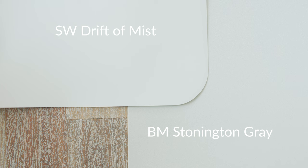But what about when I compare this with Stonington Gray by Benjamin Moore? This is considered a blue-gray. When I compare this with Stonington Gray, you're going to instantly see how Sherwin-Williams Drift of Mist is warmer than Stonington Gray, and you're going to notice the blue-gray undertones of Stonington Gray. Notice how Sherwin-Williams Drift of Mist doesn't have any blue-gray undertones — that's a key point.